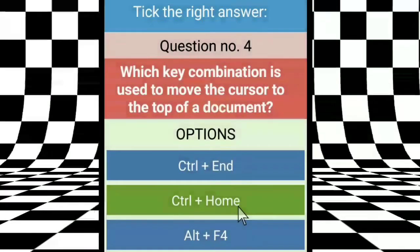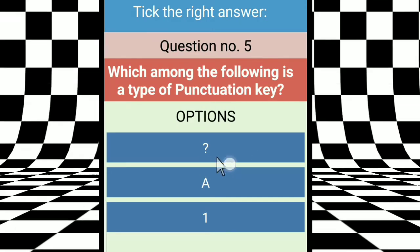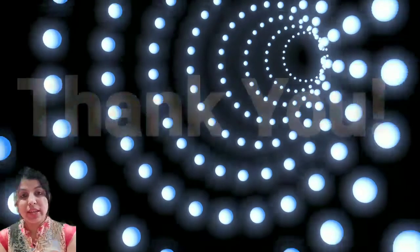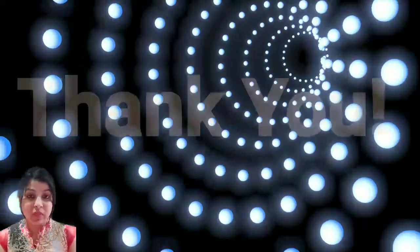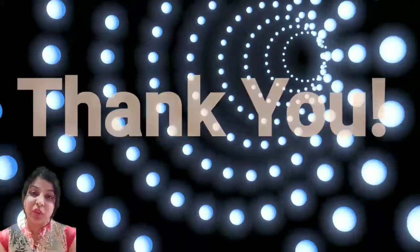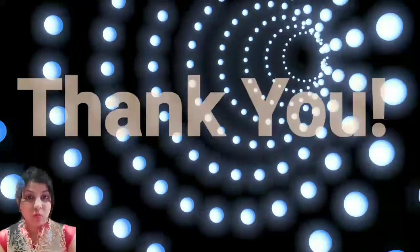Question five: which among the following is a type of punctuation key? In English there are punctuation marks like question mark, full stop, and inverted commas. The right answer is question mark. So children, the exercises are complete. For homework, do the activities in your book. We have almost completed the chapter.